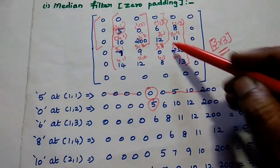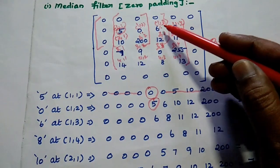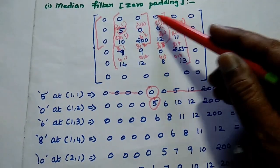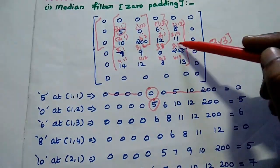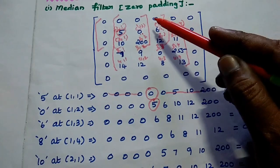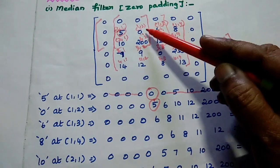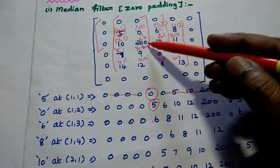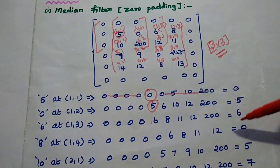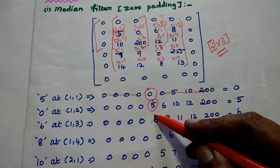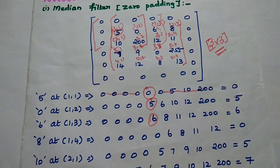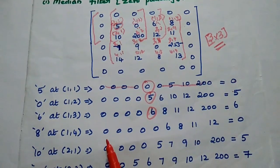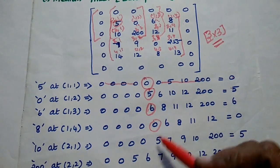Likewise for the pixel value 6, the neighboring pixels within the 3x3 box give us 4 zeros, 6, 8, 11, 12, 200 in ascending order. The center value — the median — is 6. Then for pixel value 8, we can get the median value as 0.